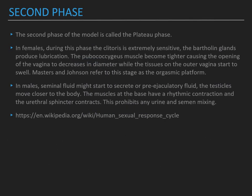The second phase of the model is called the plateau phase. In females during this phase, the clitoris is extremely sensitive. The Bartholin's glands produce lubrication. The pubococcygeus muscle becomes tighter, causing the opening of the vagina to decrease in diameter, while the tissue on the outer vagina starts to swell. Masters and Johnson refer to this stage as the orgasmic platform. In males, seminal fluid or pre-ejaculatory fluid may start to secrete. The testicles move closer to the body, the muscles at the base have rhythmic contractions, and the urethral sphincter contracts — this prevents any urine and semen from mixing. This came from Wikipedia.